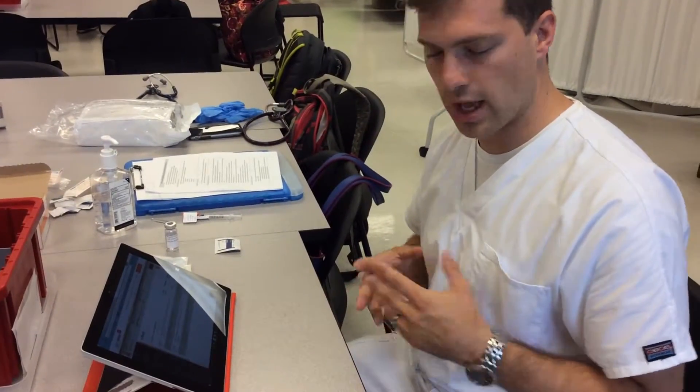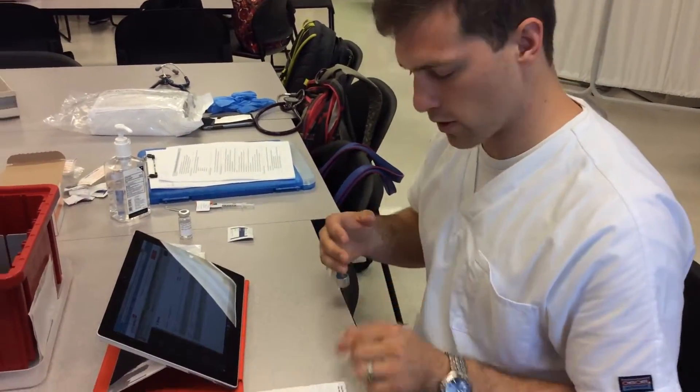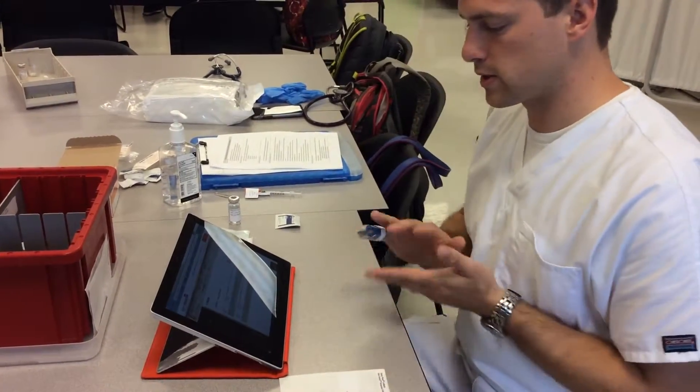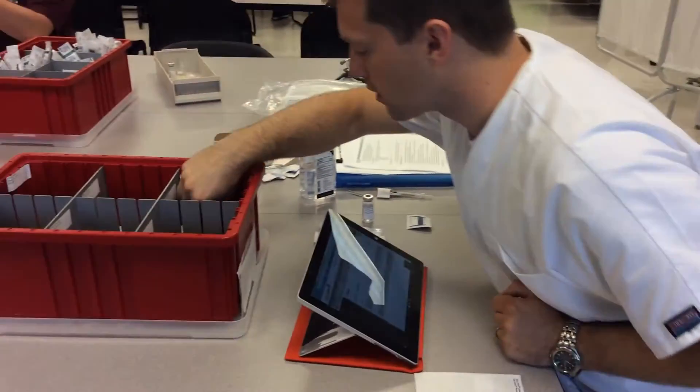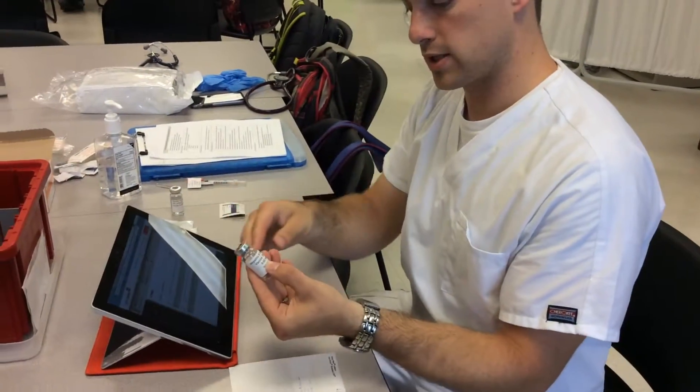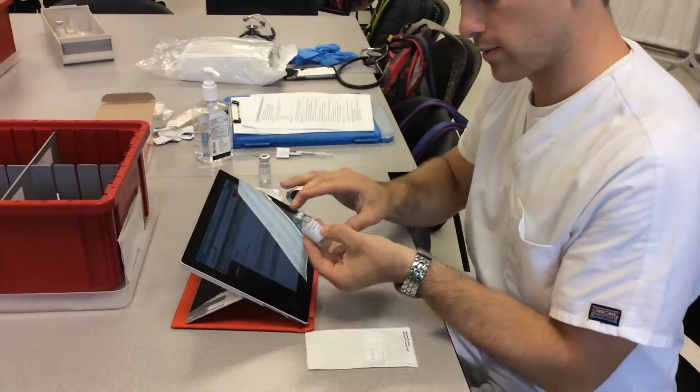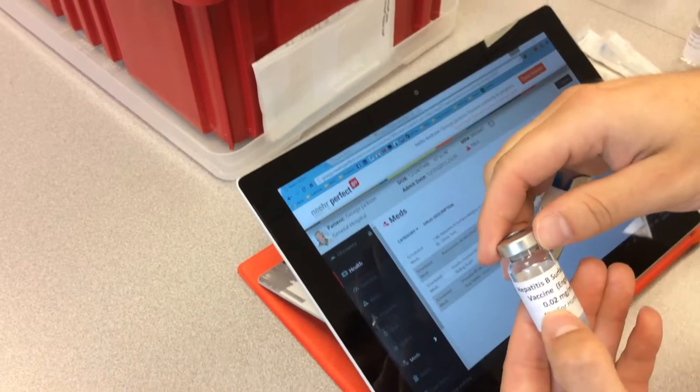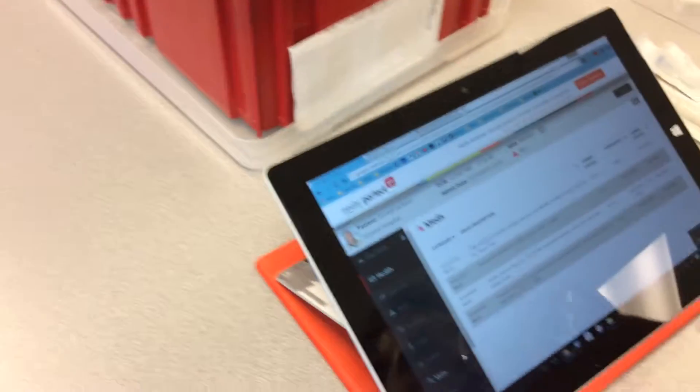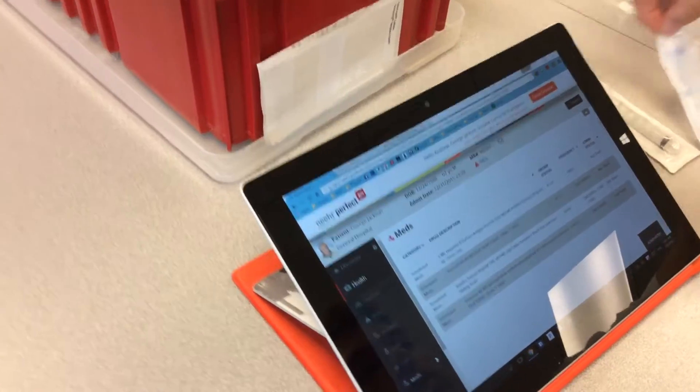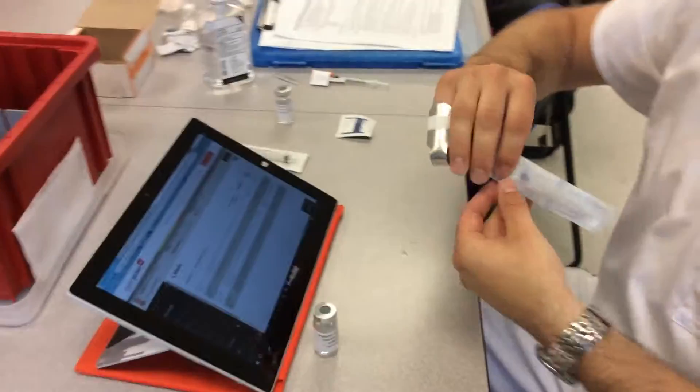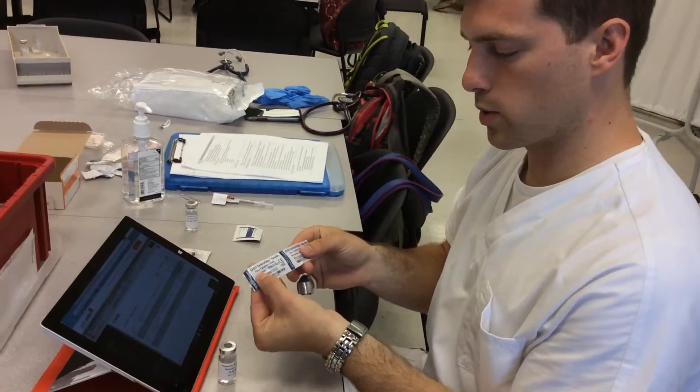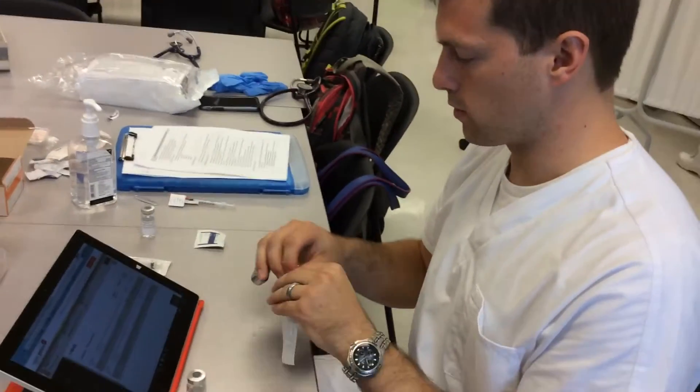The next one I'm going to do is the Hep B vaccine. Hep B vaccine is going to be one milliliter. This is Hep B surface antigen vaccine. Based on his weight of 102 kilograms, I chose a one inch, 23 gauge needle.